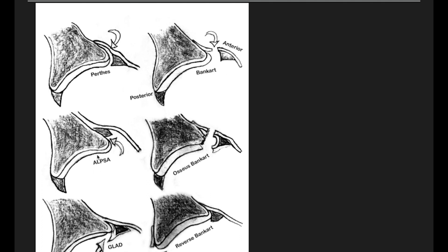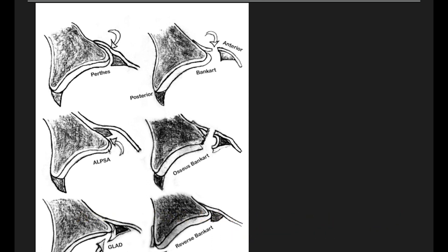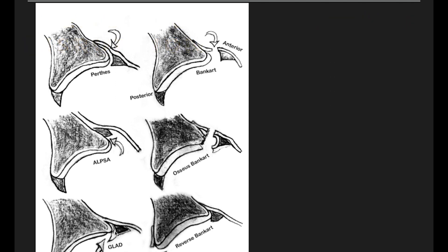Coming to the ALPSA: ALPSA is anterior labral periosteal sleeve avulsion, where you can see the medially displaced inferior glenoid labrum in between the periosteum and the bone. GLAD is glenolabral articular disruption, where you can see the tear of the anterior inferior glenoid labrum along with the cartilage. Here the cartilage is intact in Bankart, but in GLAD the cartilage is also torn out.